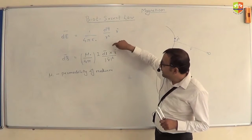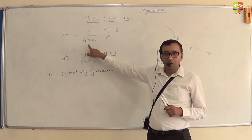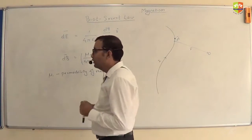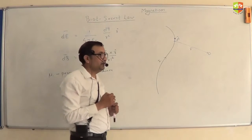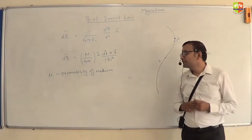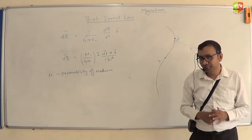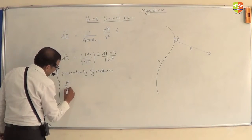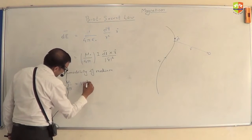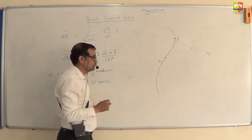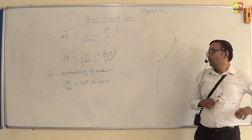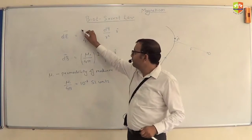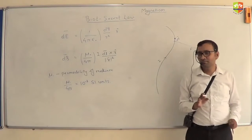Let's analyze and compare the electric field and magnetic field formulas. What is the basic similarity between them? Both are inverse square laws — both the magnetic field and the electric field follow the inverse square law. The first difference: the electric field formula has 1/4πε₀ while the magnetic field formula has μ₀/4π.